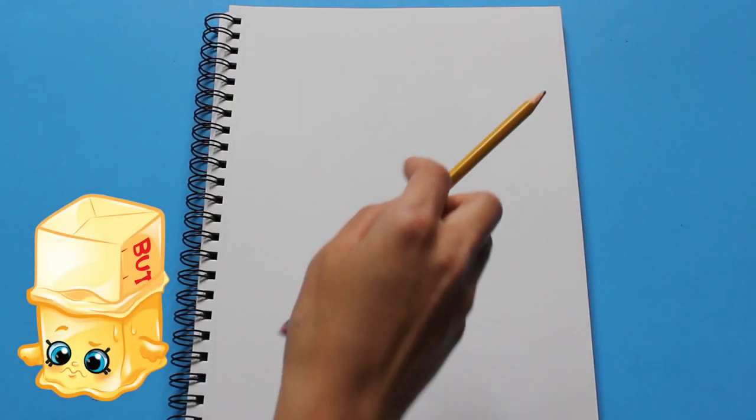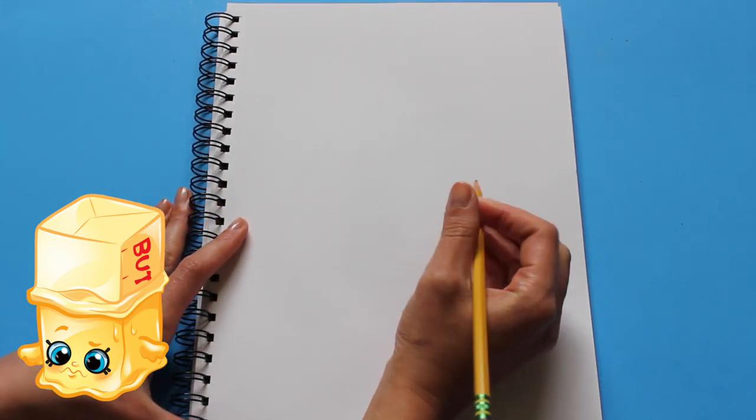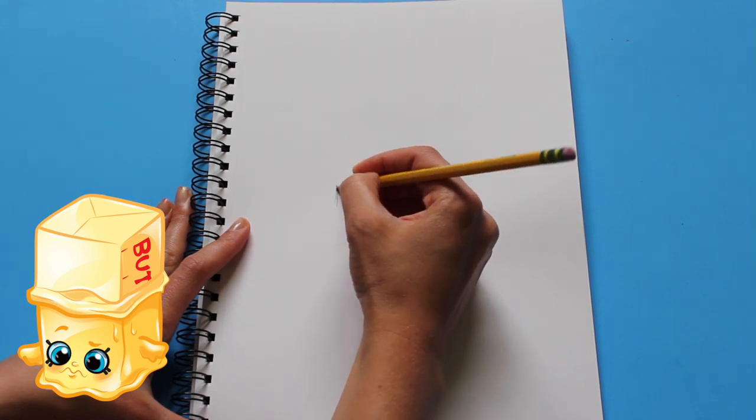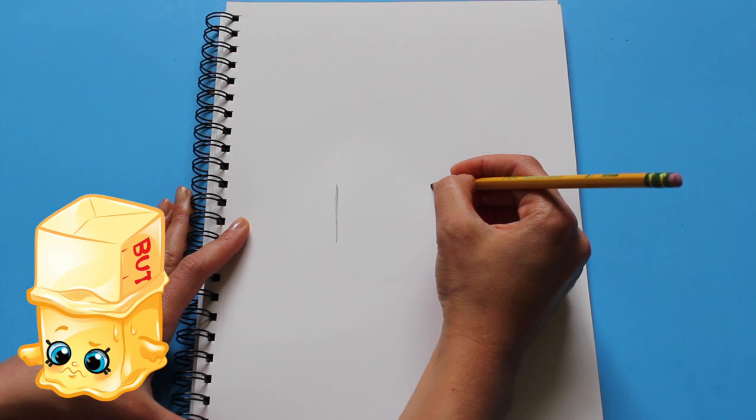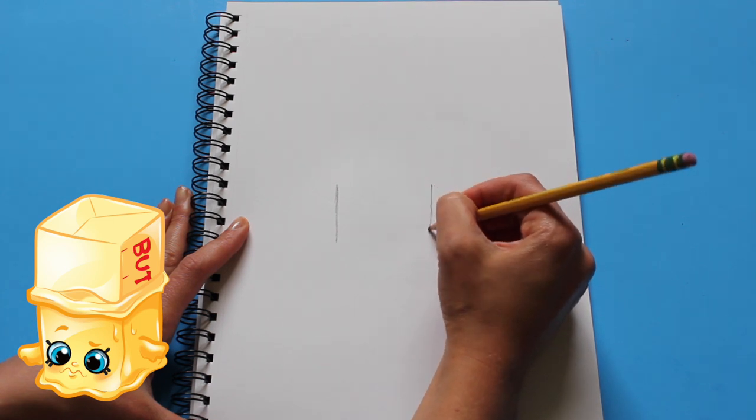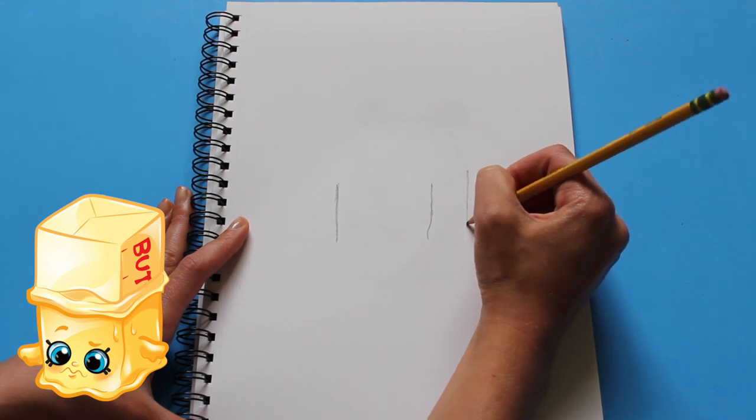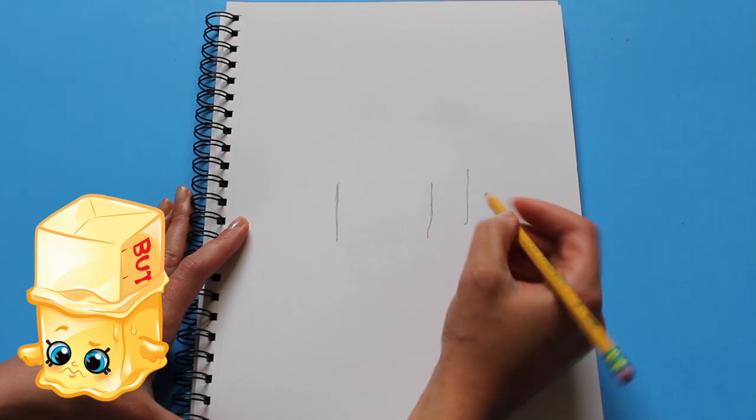So let's get started. Alright, so Buttercup - who doesn't love butter? I'm gonna start with the bottom piece of it. We're gonna draw a straight line, and then on this side the line is somewhat curvy. Then there's another line going upwards and it kind of curves to give it that 3D effect. So we have three lines so far.